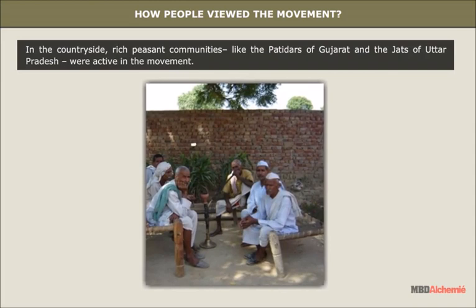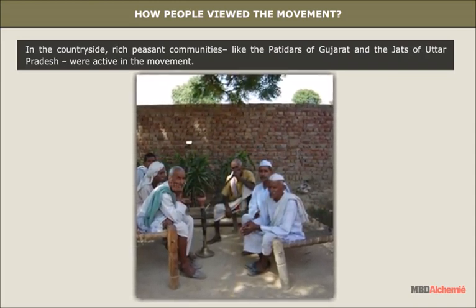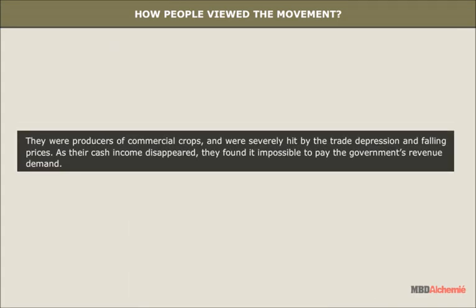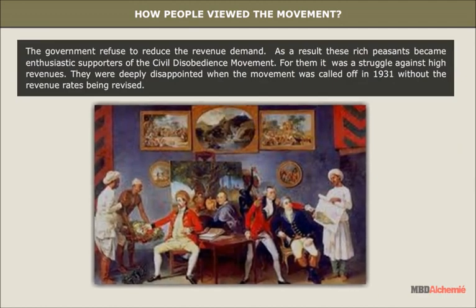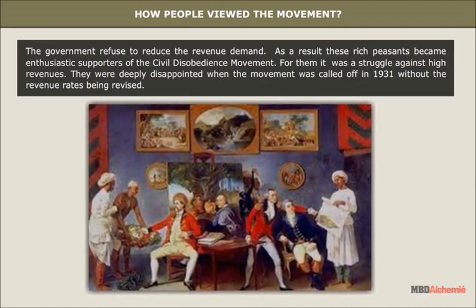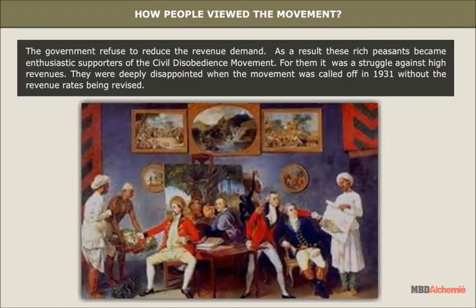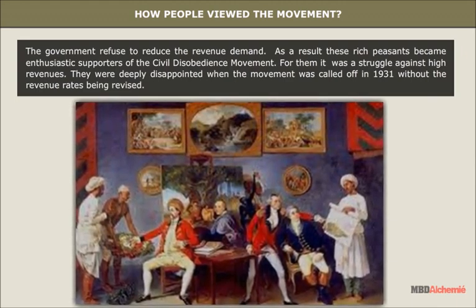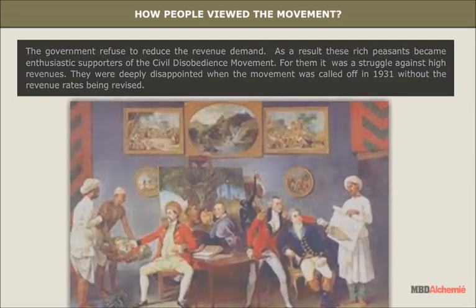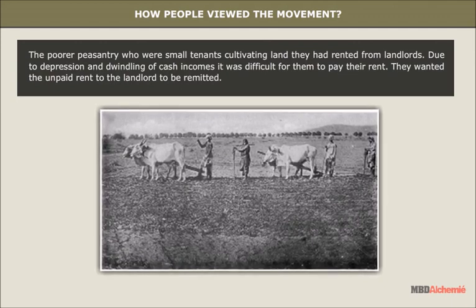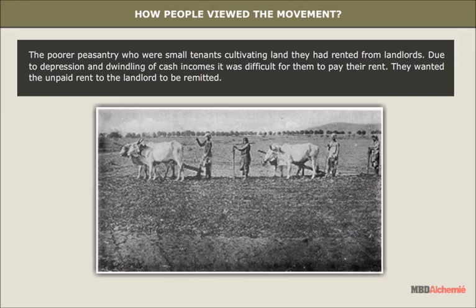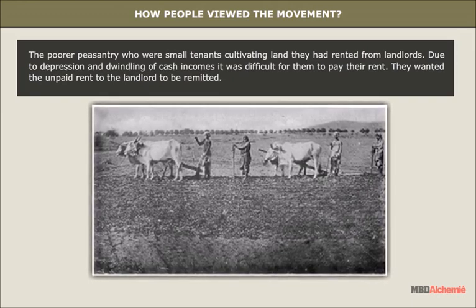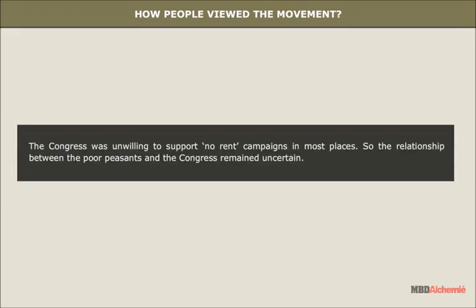In the countryside, rich peasant communities like the Patidars of Gujarat and the Jats of Uttar Pradesh were active in the movement. They were producers of commercial crops and were severely hit by the trade depression and falling prices. As their cash income disappeared, they found it impossible to pay the government's revenue demands. The government refused to reduce the revenue demand, and as a result these rich peasants became enthusiastic supporters of the civil disobedience movement — for them, it was a struggle against high revenues. They were deeply disappointed when the movement was called off in 1931 without the revenue rates being revised. The poorer peasantry, who were small tenants cultivating rented land, found it difficult to pay their rent due to depression and dwindling cash incomes. They wanted unpaid rent to the landlord to be remitted, but the Congress was unwilling to support no-rent campaigns in most places, so the relationship between poor peasants and the Congress remained uncertain.